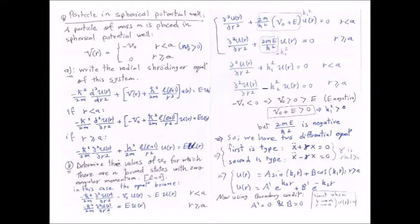In this, we will study particle in a spherical potential well. The particle is inside the sphere and cannot jump outside because we have a spherical potential well given by V(r) = -V₀ when r < a, and 0 when r ≥ a, where V₀ is positive, so -V₀ is negative.